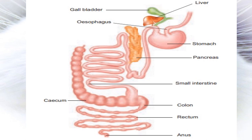Microorganisms like bacteria are present in the cecum, which help in the digestion of cellulose. The small intestine opens into the large intestine. The final region of the large intestine is the colon and then the rectum, which finally opens outside by the anus.